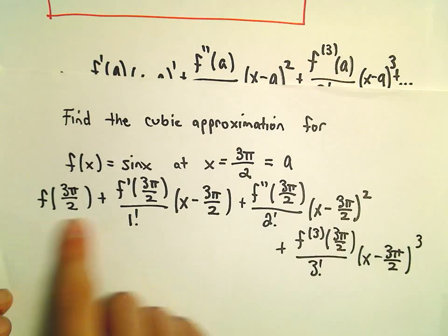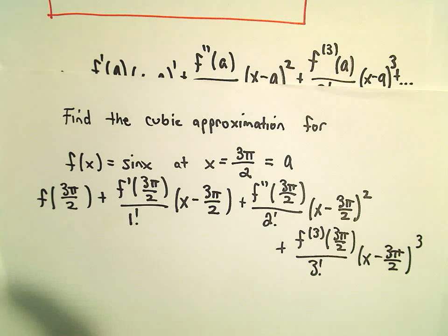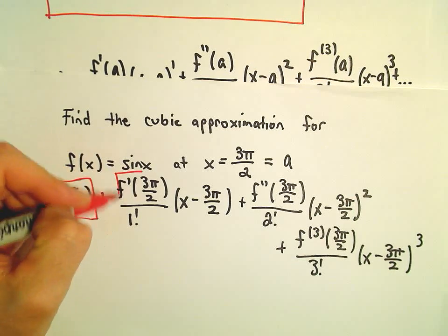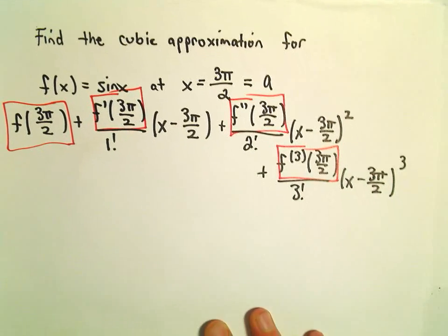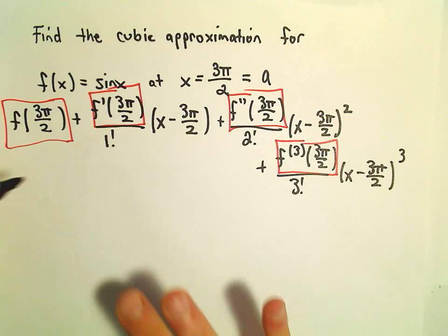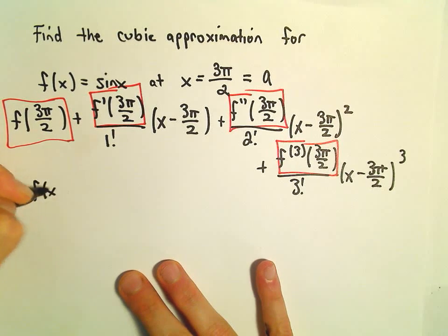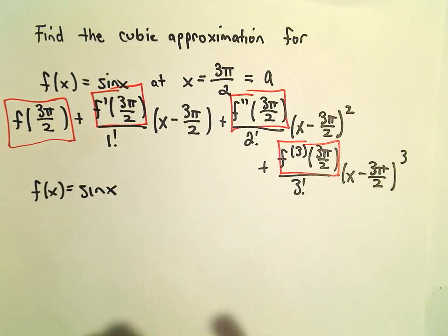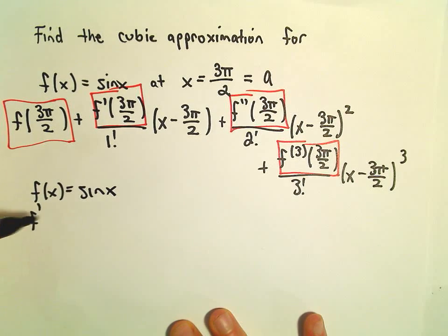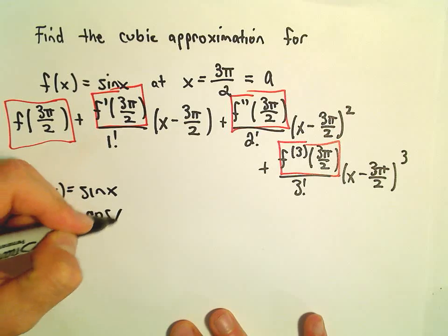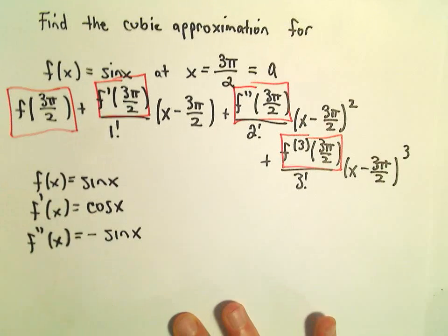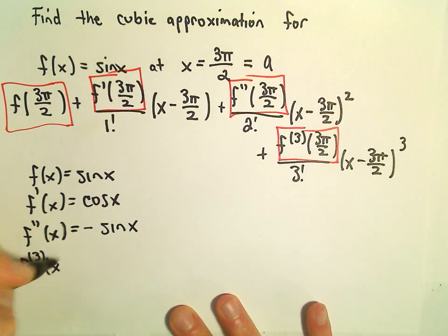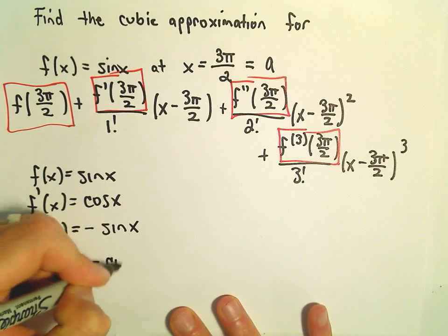We'll have to fill in this stuff. The only things we have to compute are f(3π/2), f prime, f double prime, and f triple prime. The first thing I usually do is I just take all my derivatives. So f(x) is sine x. The first derivative is going to be cosine x. The second derivative will be negative sine x. And then the third derivative will simply be negative cosine x.